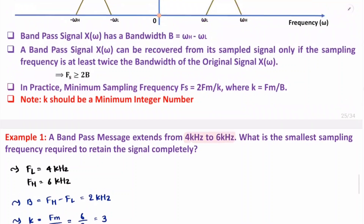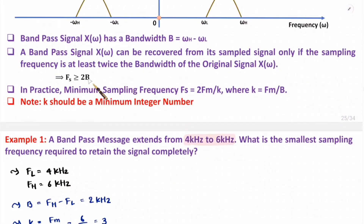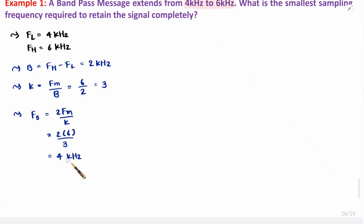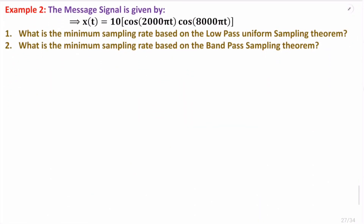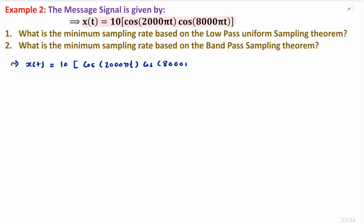If you use the equation fs equals 2B directly, that will result in the correct answer here, but that is not always the case. Let me take one more example for more clarity. In this question, we have a message signal x of t equals 10 cos of 2000 pi t times cos of 8000 pi t. First of all, we need to understand and identify the frequency components of this signal. What I'll do is simplify this equation. We have a cosine times cosine signal, so we need to separate it into an algebraic addition of cosine components.